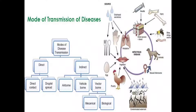Then there is vehicle-borne disease. Vehicles here means carriers such as water, air, and soil. Disease transmission that occurs through these carriers is called vehicle-borne disease. Then vector-borne disease — for example, the parasite Plasmodium, which is a protozoa, is transmitted through the female Anopheles mosquito. So this is biological vector transmission.